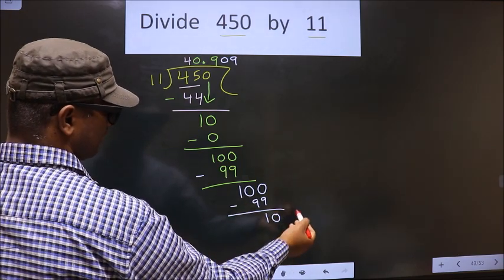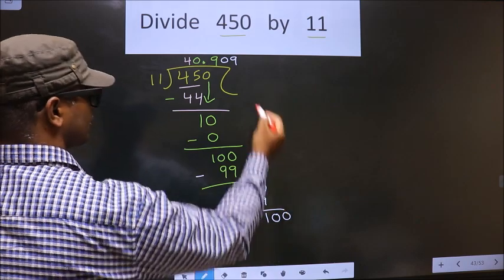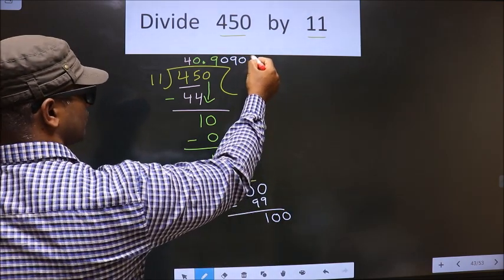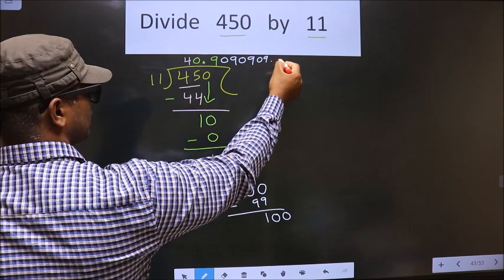10 you can put. But to put the second 0, you should also put 0 here. So we get 40.9090 goes on. This is our quotient.